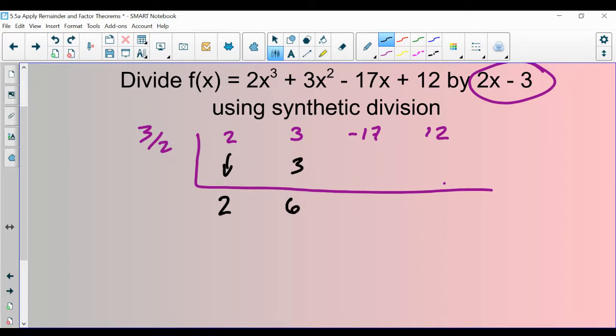Now do 6 times 3 halves. Whenever you write a new number down in the bottom row, multiply it and write it in the next spot. So 6 times 3 halves, 18 over 2 is 9. Add these together, you're going to get negative 8.